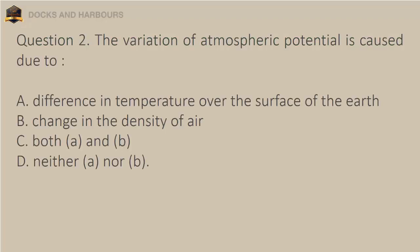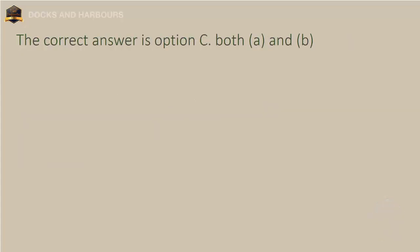Question 2. The variation of atmospheric potential is caused due to: A. Difference in temperature over the surface of the earth. B. Change in the density of air. C. Both A and B. D. Neither A nor B. The correct answer is Option C: Both A and B.